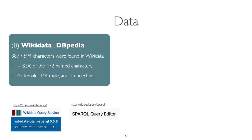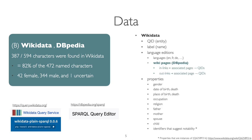Another data source is naturally Wikipedia. We managed to map 82% of the named characters in Wikidata. We used the query services as listed below and got the QID, the label, the language editions, the hyperlinks on the Wikipedia pages, and a bunch of properties.